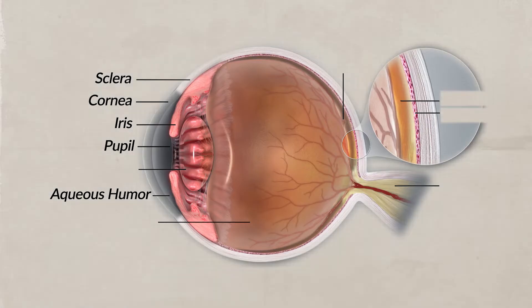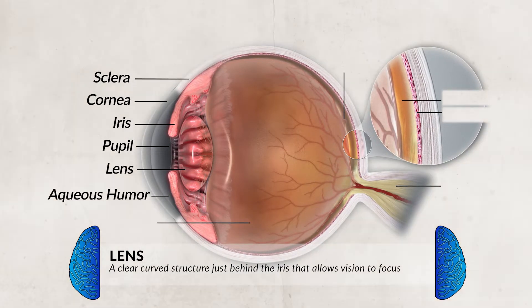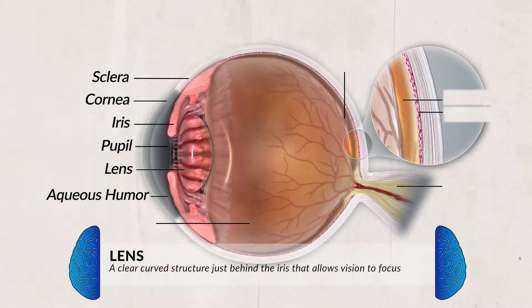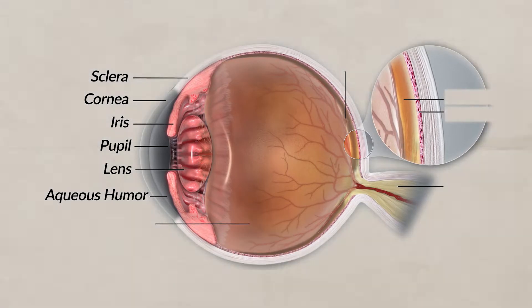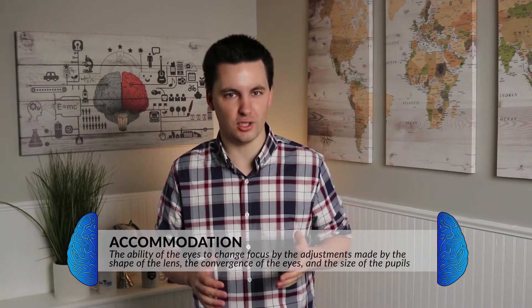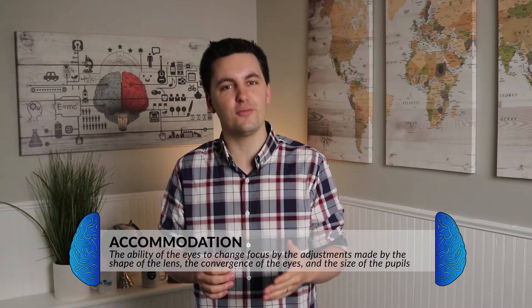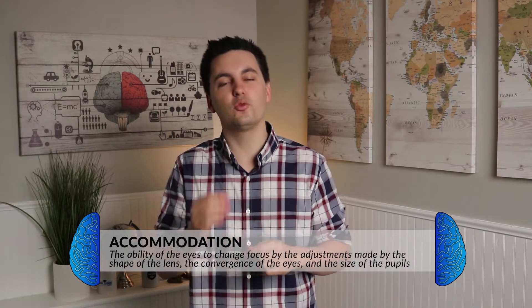Behind the pupil and the iris is the lens. The lens will change shape to help focus objects onto the retina. The lens is biconvex, which just means it's curved on both ends. The ability for the eye to change focus is known as accommodation. As we get older, it can become more difficult for the lens to change its shape, which is why it's common for people to need glasses.